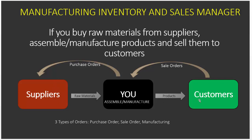You then sell the products to your customers when you receive their orders. In this case, there are three types of orders: purchase orders, which you make to your suppliers to buy raw materials; sale orders, which customers make to you so you can sell products; and the manufacturing order type.